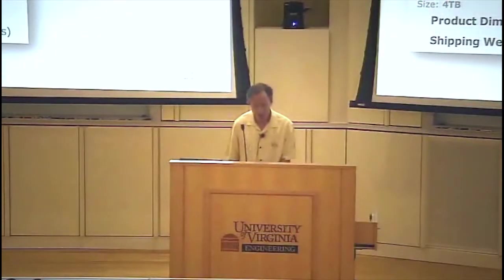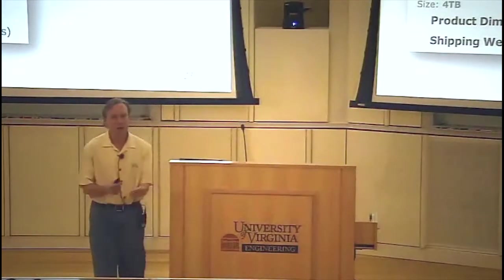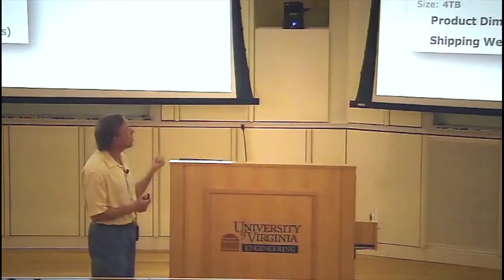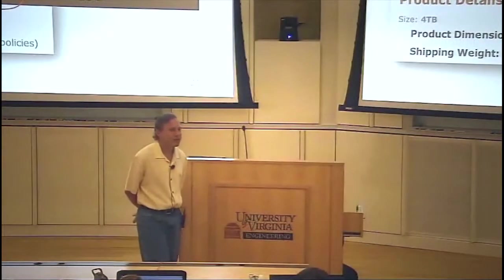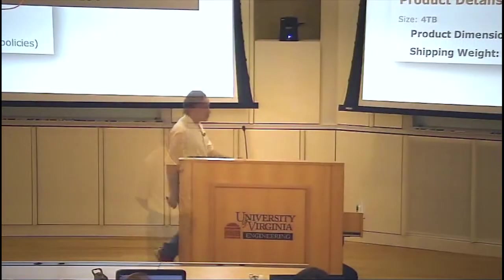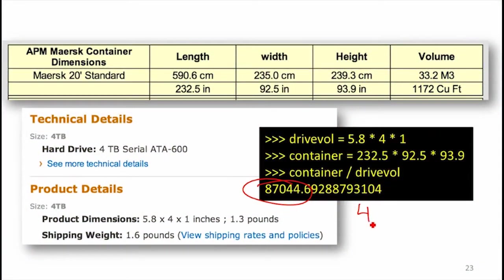We also need to know how many actual bits we have. Our goal is to measure bandwidth — bits per time. This hard drive is 4 terabytes. How many bits is that? It's a tricky question. If we're turning bytes into bits, we multiply by 8, giving us 32 terabits.